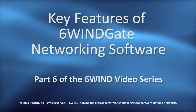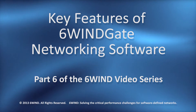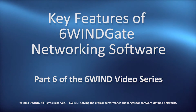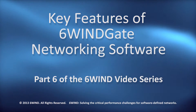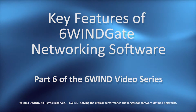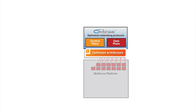In this short video, we'll explain the key features of the 6Wingate networking software and we'll highlight the architectural elements that enable 6Wingate to deliver industry-leading performance for networking applications. Architecturally, the 6Wingate stack is split into a control plane and a data plane. The data plane processing runs on dedicated cores within the multi-core hardware platform that run outside the Linux kernel, and therefore are not subject to the overheads and latency that limit the performance and scalability of networking functions running in the standard Linux stack.